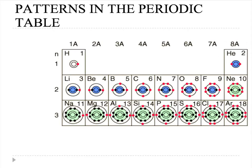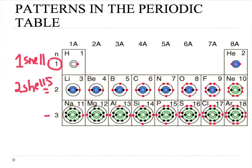You should have gotten these results for the patterns in the periodic table. The first period only contains one shell. The second period has two shells for all the elements on it. The third period has three shells where we place the electrons. If you take a look at the valence electrons, there is one valence electron, which matches the number of the group.